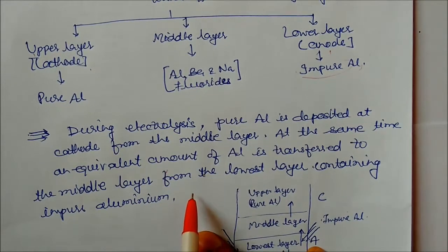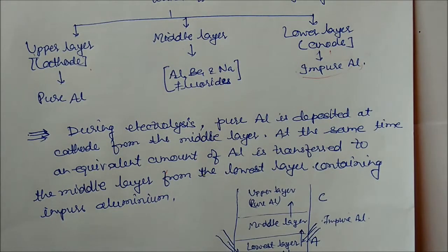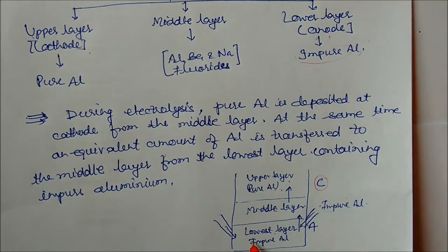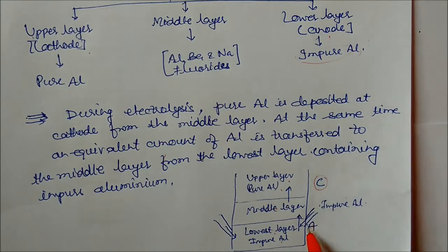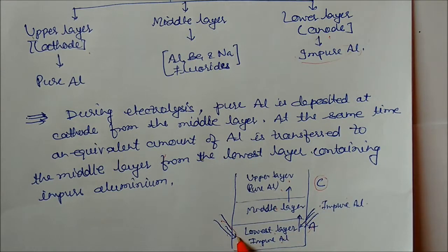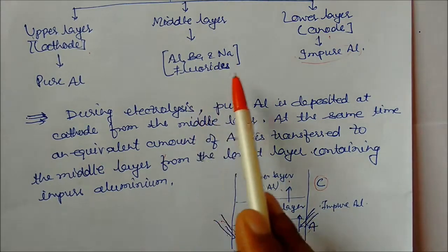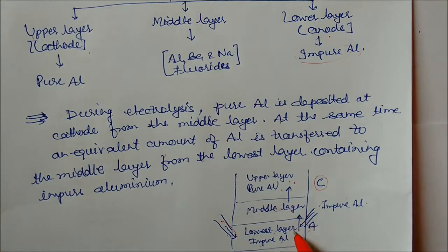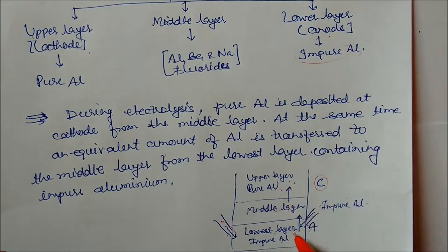At the same time, an equivalent amount of aluminium is transferred from the lowest layer (impure aluminium) to the middle layer. Pure aluminium is lighter in density and impure aluminium is denser. The three layers are: top — pure aluminium (cathode), middle — electrolyte mixture, bottom — impure aluminium (anode). Impure aluminium is continuously supplied from outside, and in this way pure aluminium is obtained.